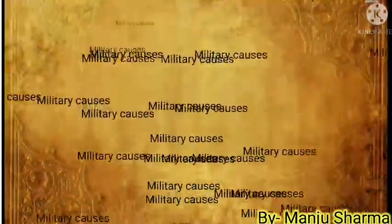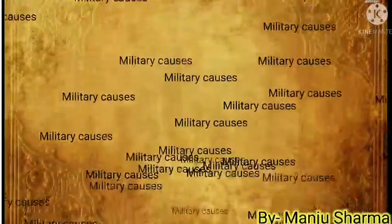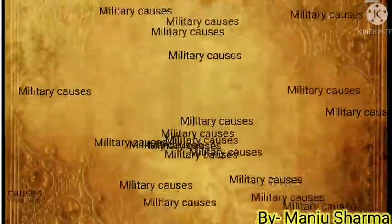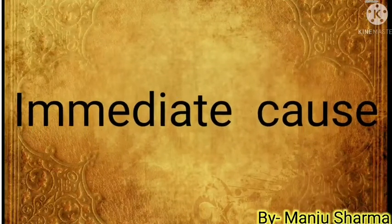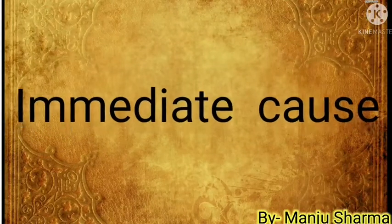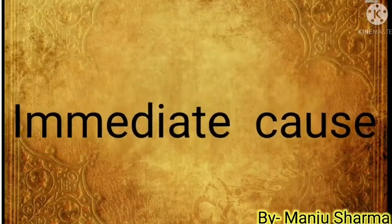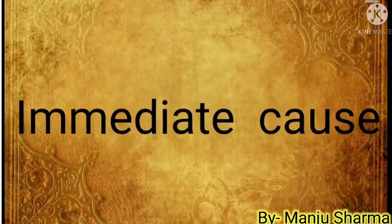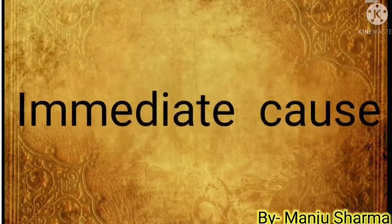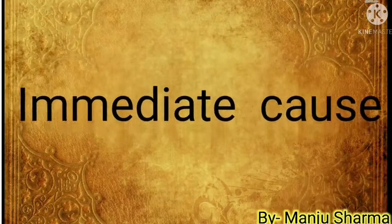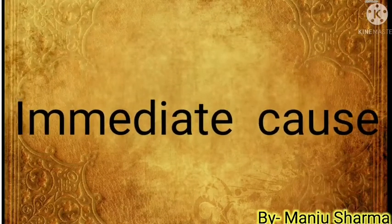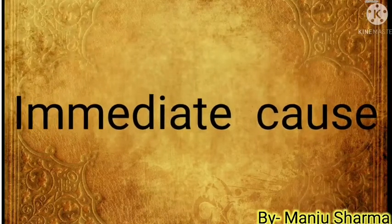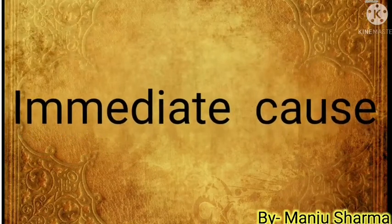Regarding military causes, Indian soldiers formed nearly 85% of total British troops in India. As they were an integral part of Indian society, they too suffered the consequences of the oppressive British rule. The immediate cause of the rebellion was the introduction of the Enfield rifle in the army. Its cartridges were covered with a greased paper cover, which had to be bitten off before loading. The news spread that the grease was made of cow and pig fat. As Hindus consider the cow sacred and Muslims do not eat pig meat, both communities were enraged. On 10th May 1857, rebel soldiers killed the British officers, released their imprisoned comrades, and hoisted the flag of revolt.